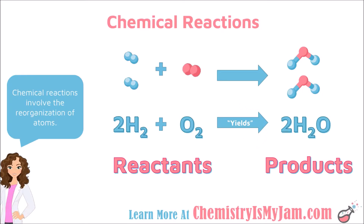This arrow indicates that a reaction has taken place. We typically read the arrow as 'yields' — hydrogen plus oxygen yields water. The things on the left-hand side of the equation are what you start off with; those are your reactants, what you had before the reaction took place. The right-hand side represents your products — what you have after the reaction has taken place. Your reactants will yield your products.